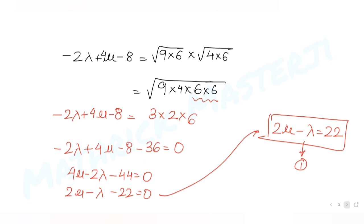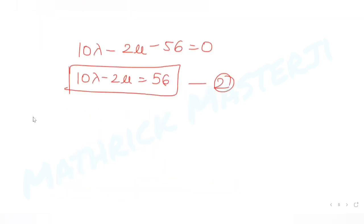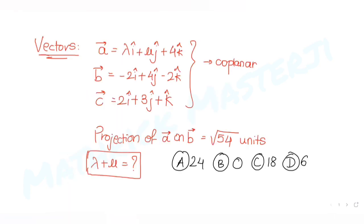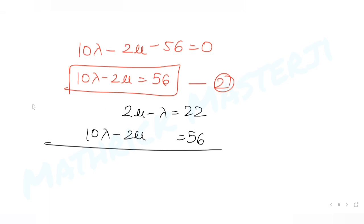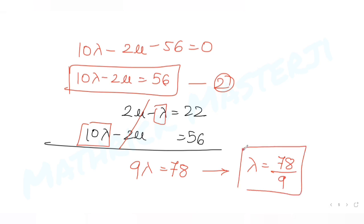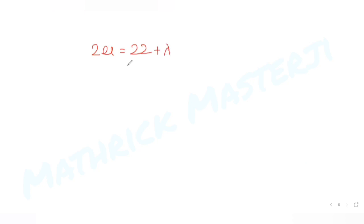Now I have both equations. Equation 1: 2μ − λ = 22. Equation 2: 10λ − 2μ = 56. Adding the two equations, the 2μ terms cancel, giving 9λ = 78, so λ = 78/9. Substituting back into equation 1: 2μ = 22 + 78/9.